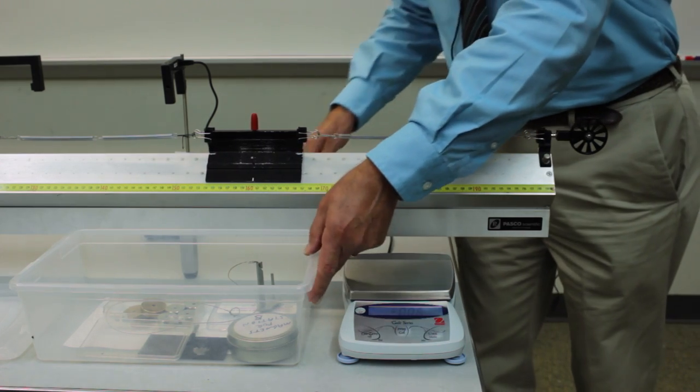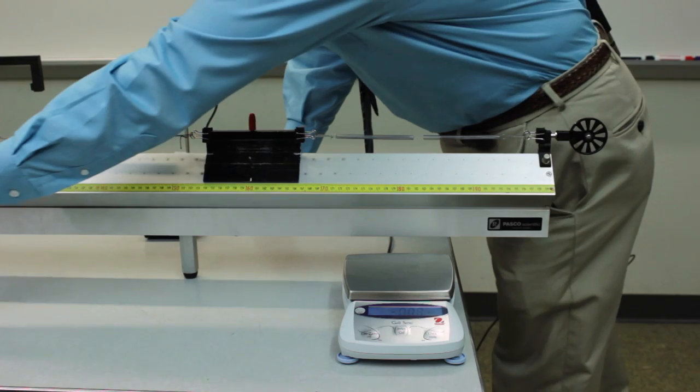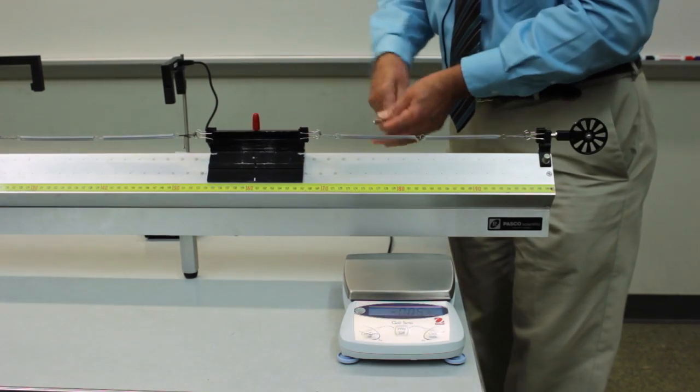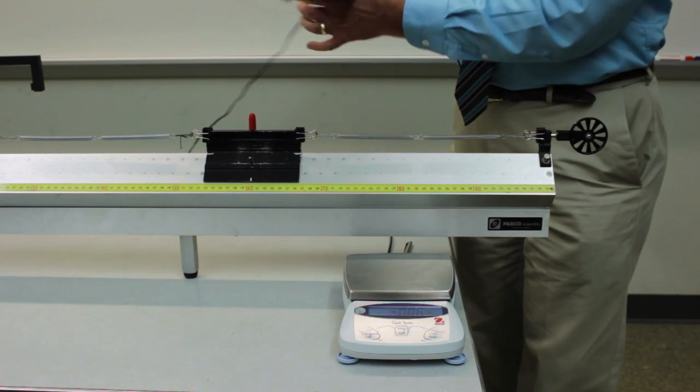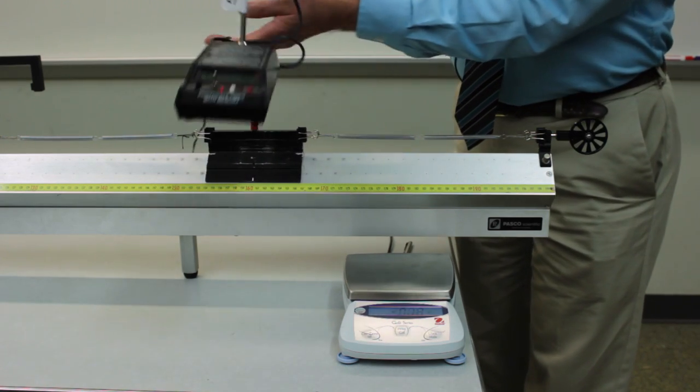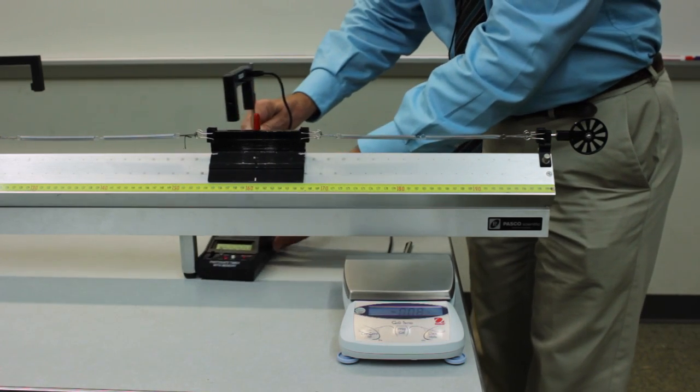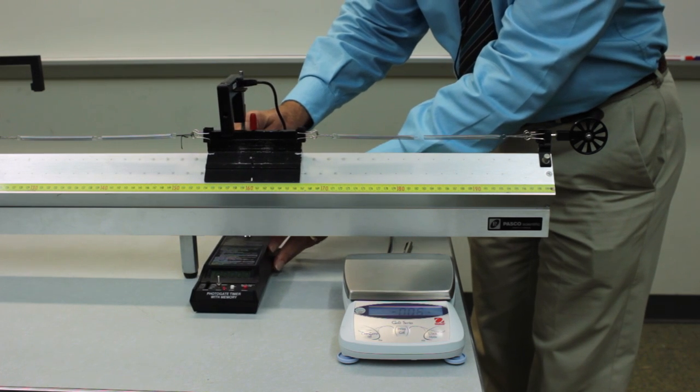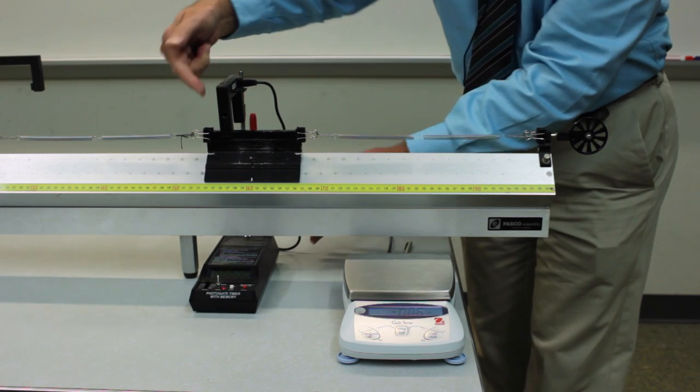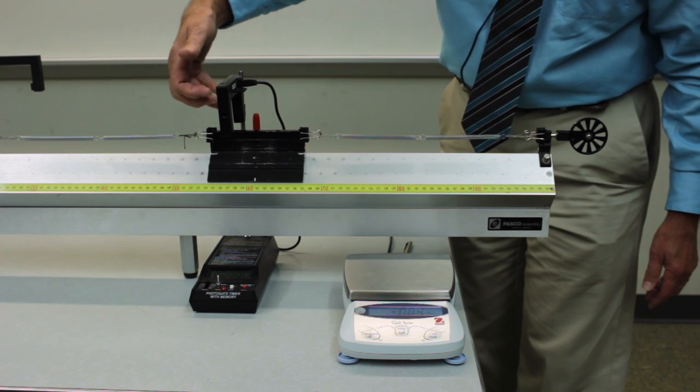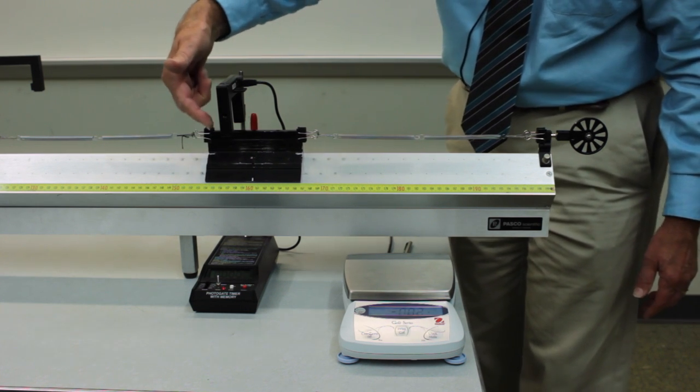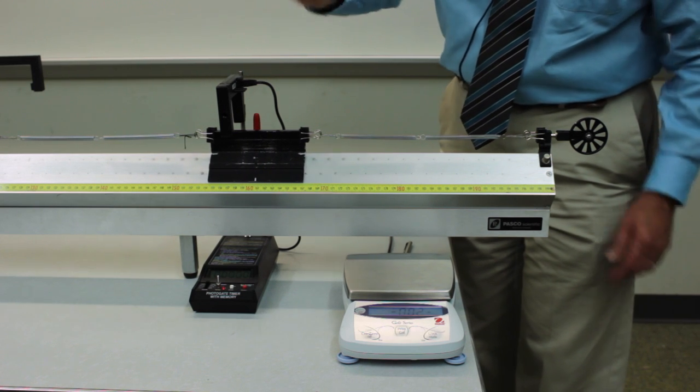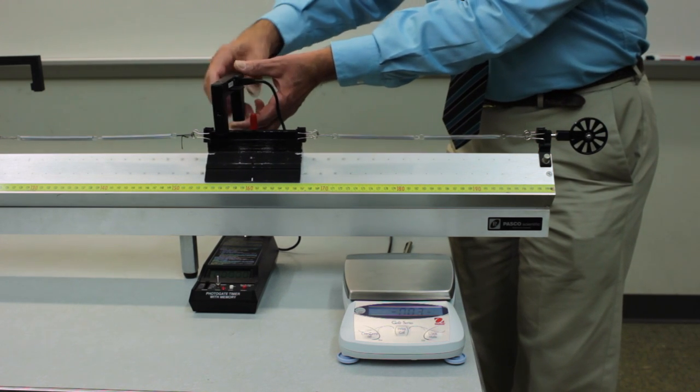Finally, we want to measure the period. So I'll just slide the accessories out of the way and bring in a photogate timing device. So this system enables you to measure the period. There is an infrared photodiode and a phototransistor that measures the light coming across this little beam.